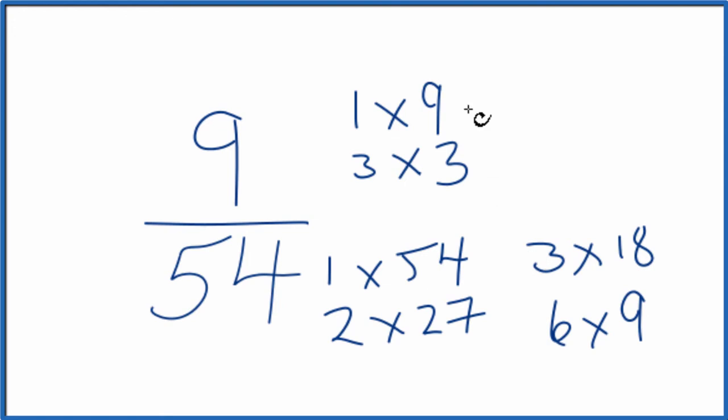And it looks like actually 9. 9 is the greatest common factor between 9 and 54. So we'll divide 9 by 9, 54 by 9, and we'll simplify 9/54.